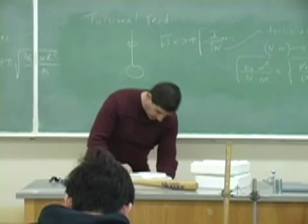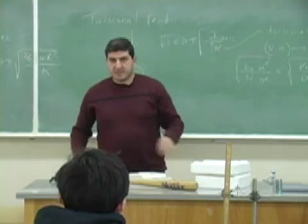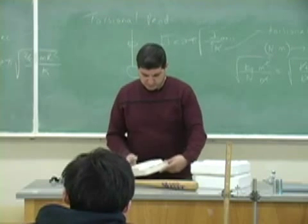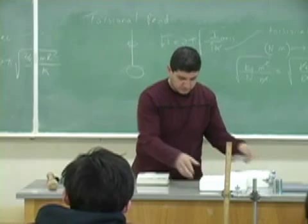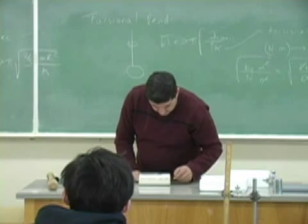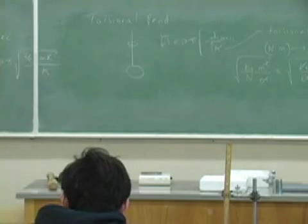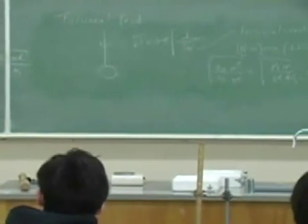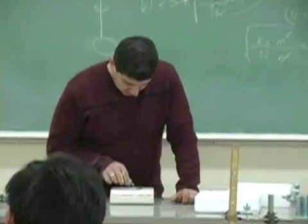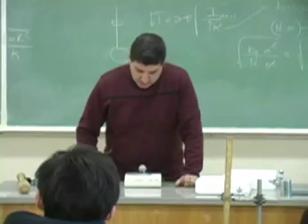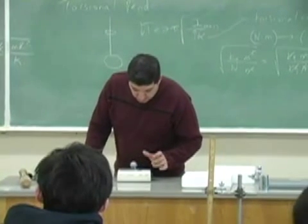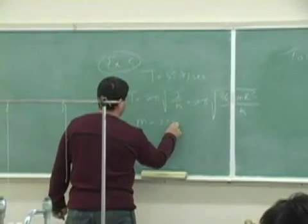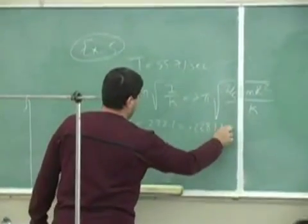So let's weigh the sphere now and find it, because we actually need the physical dimensions of the sphere. The sphere has a mass of 228.1 grams, so it's going to be 0.2281 kilograms.